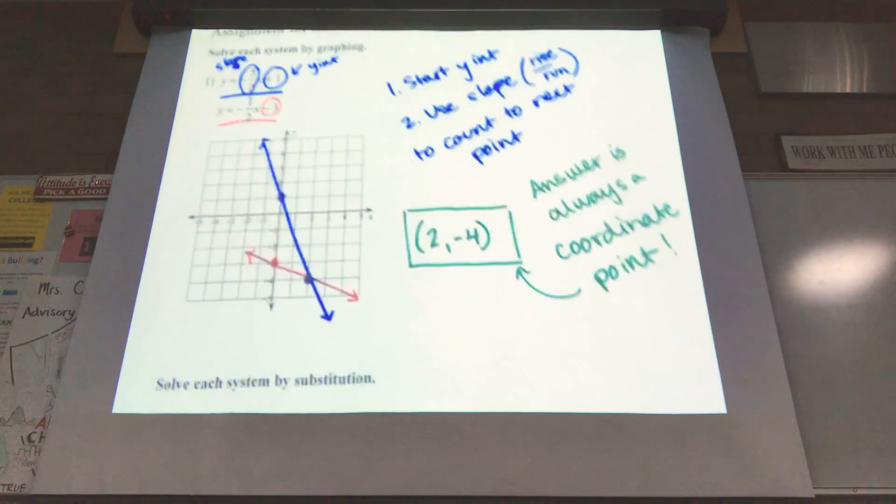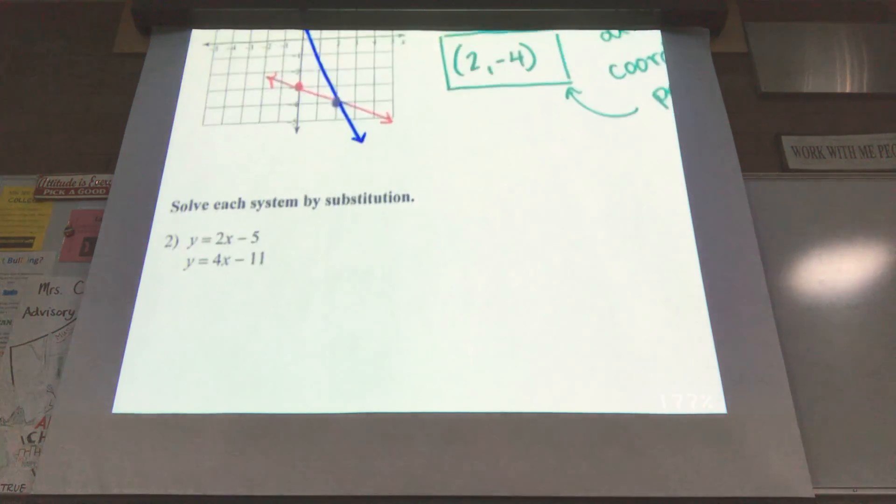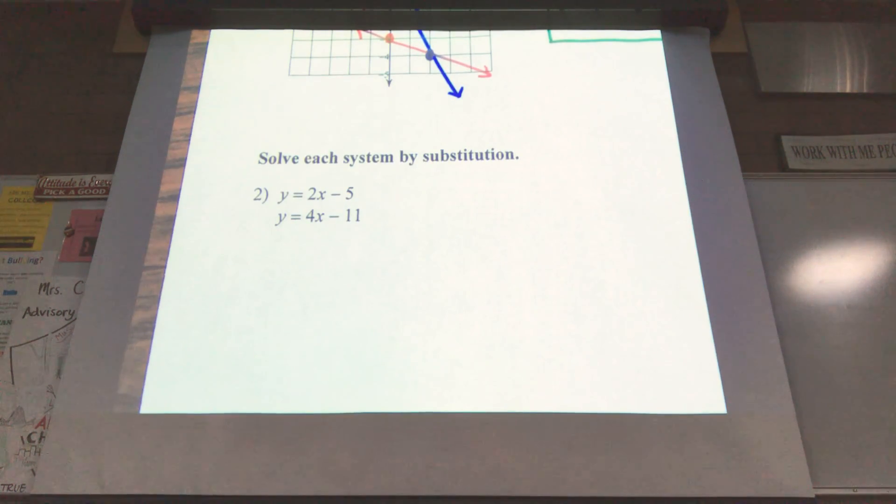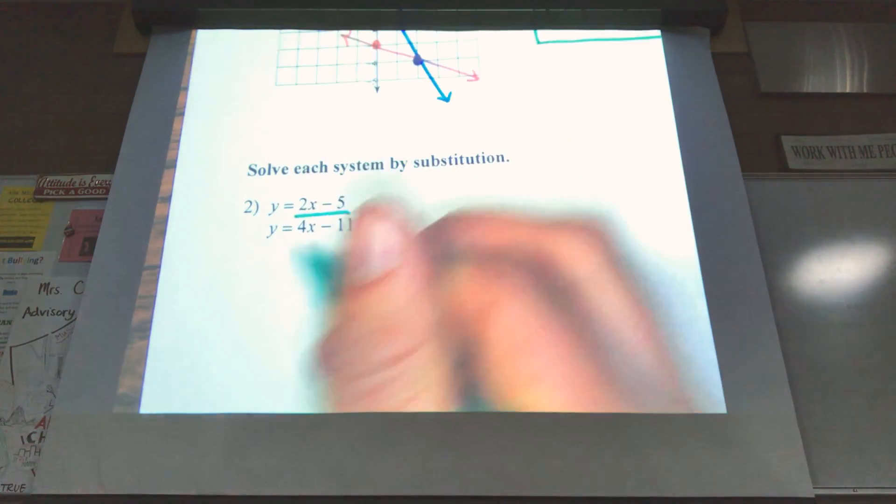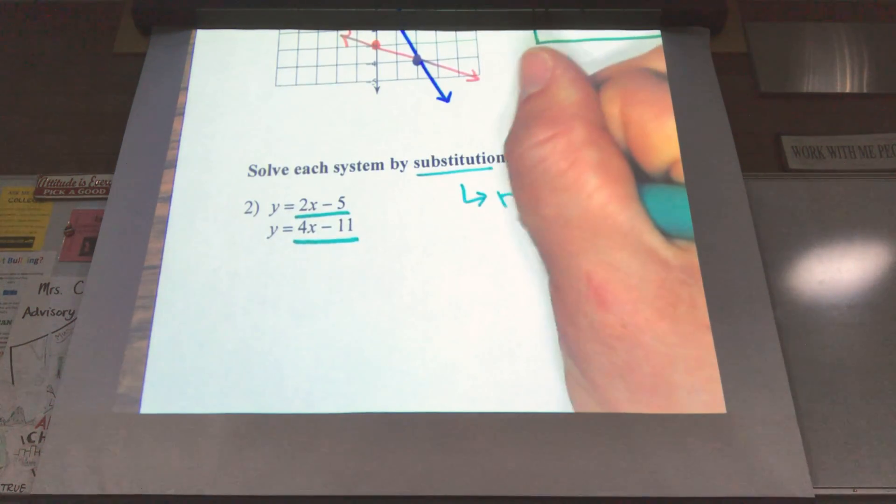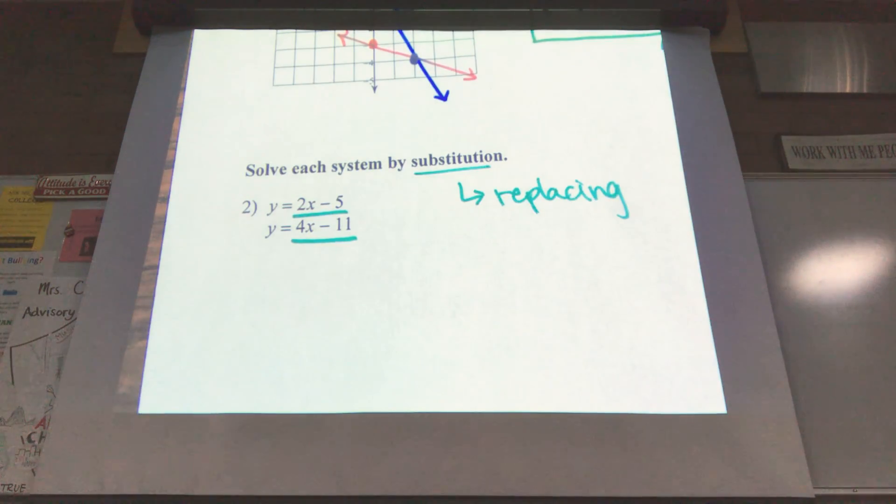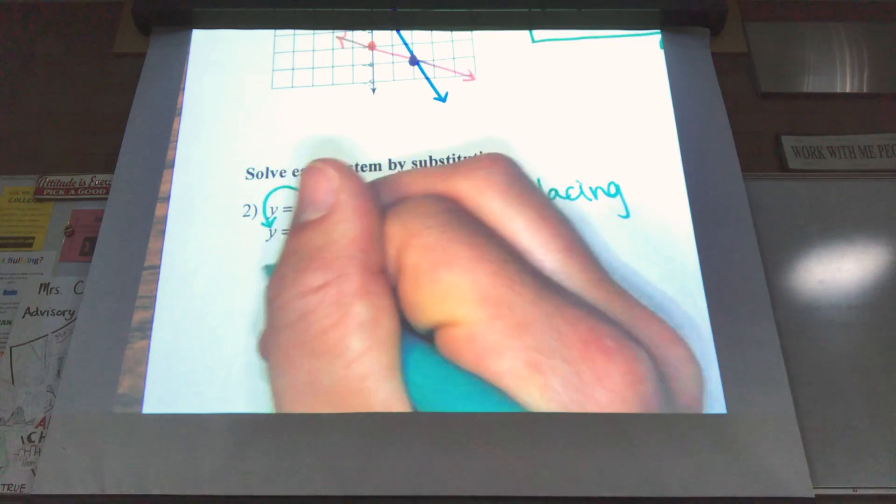Let's look at number 2. Number 2 we're solving by substitution. So we see that they are both set equal to y. So we can say that y is equal to this one. But since that one's also equal to y, y is also equal to that one. Substitution, just like if you guys had a substitute here, if I were gone, there would be someone replacing me for that day. So we are going to replace the y with that other equation. Substitute it in.